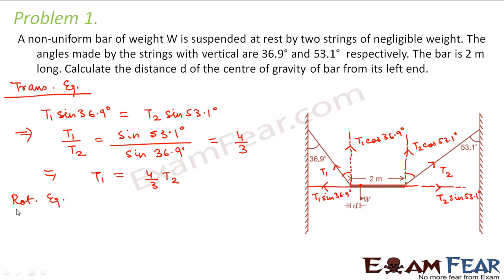Now let us consider rotational equilibrium. Rotational equilibrium ensures there is no angular displacement of the bar — no movement upward or downward. As per rotational equilibrium, the net torque on the system should be equal to zero. Torque is R cross F, and we assume our origin to be the center of gravity, so the net torque about the center of gravity should be zero.